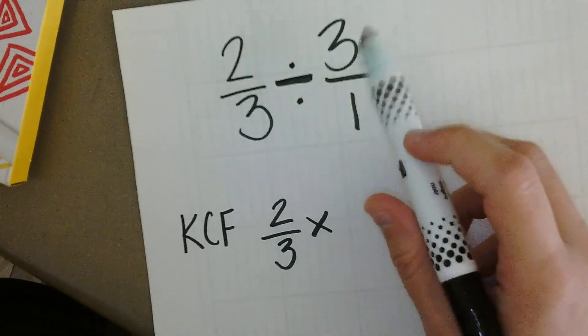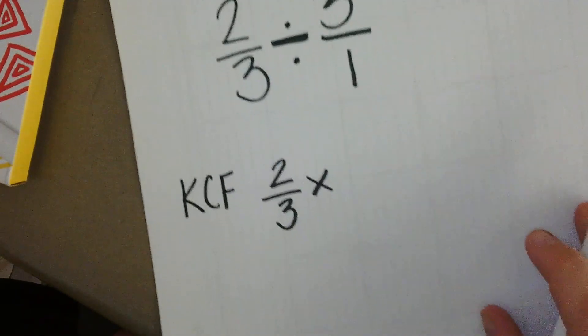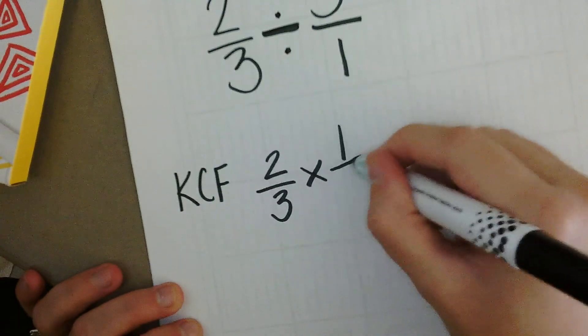The second fraction is three over one, so the reciprocal of three over one is one over three.